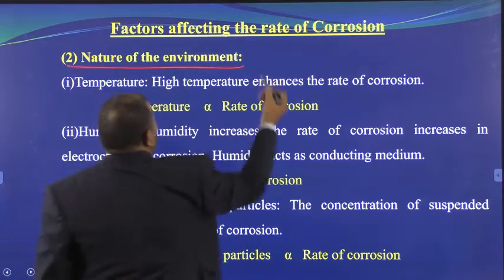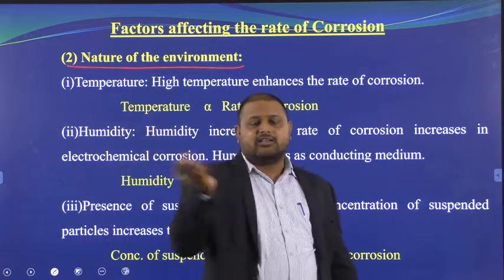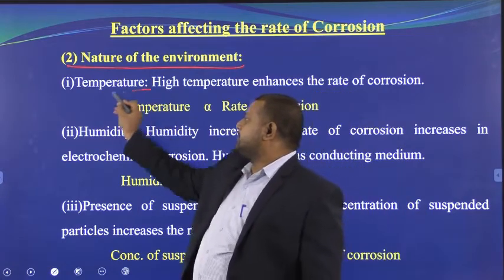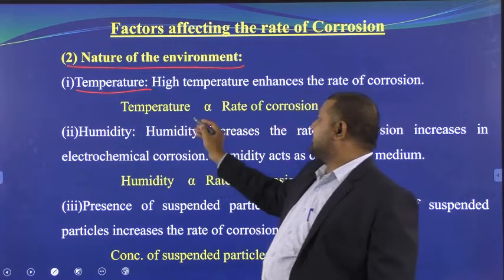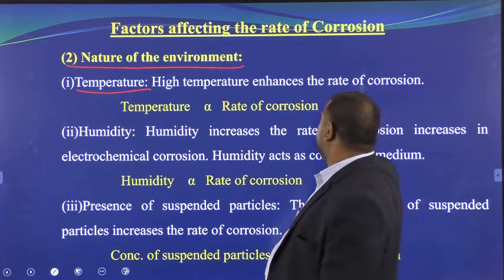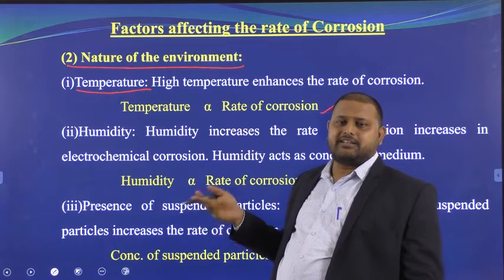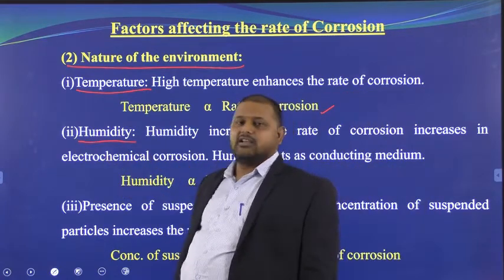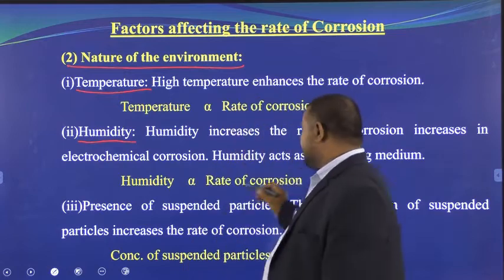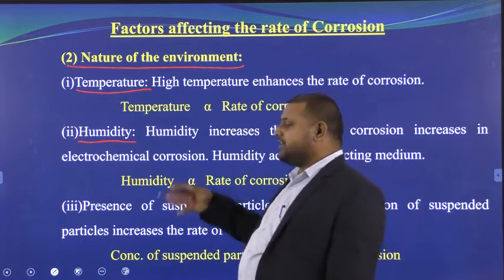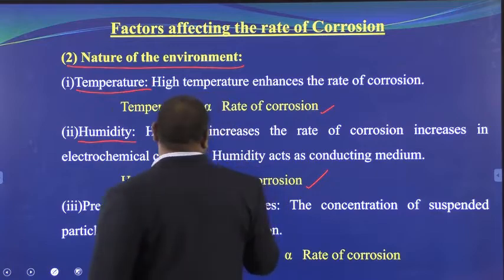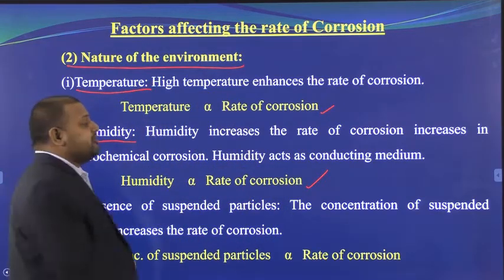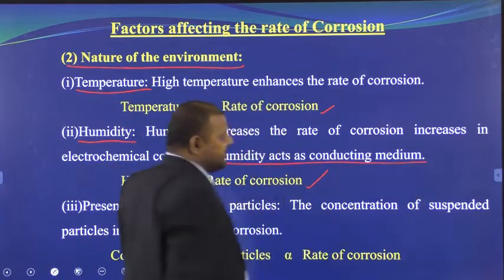The second factor is the nature of the environment — the surrounding atmosphere where the metal is placed. First, temperature: if temperature increases, the rate of corrosion increases. Second, humidity: if there is more moisture, the rate of corrosion increases, because humidity acts as a conducting medium.